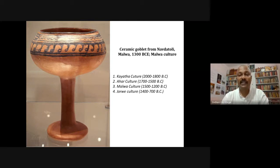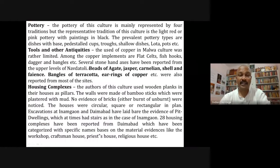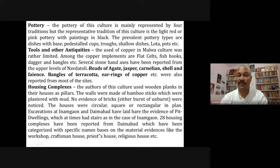Some more examples: a ceramic goblet from Navdatoli from the Malwa region — the Malwa Culture. The Kayatha Culture dates from 2000 BC to 1800 BC. Then the Malwa Culture of central India, and the Jorwe Culture from 1400 BC to 700 BC — fine examples of terracotta pottery. The representative tradition of this culture is light red or pink pottery with black painting. Prevalent pottery types include dishes with a base, pedestal cups, shallow dishes, and lota pots.